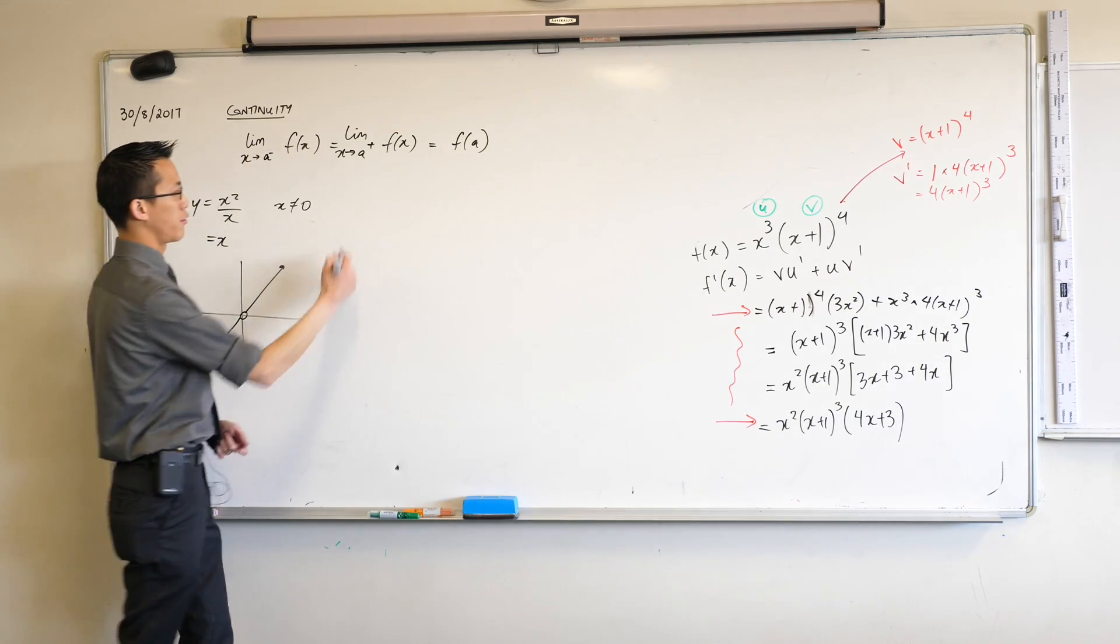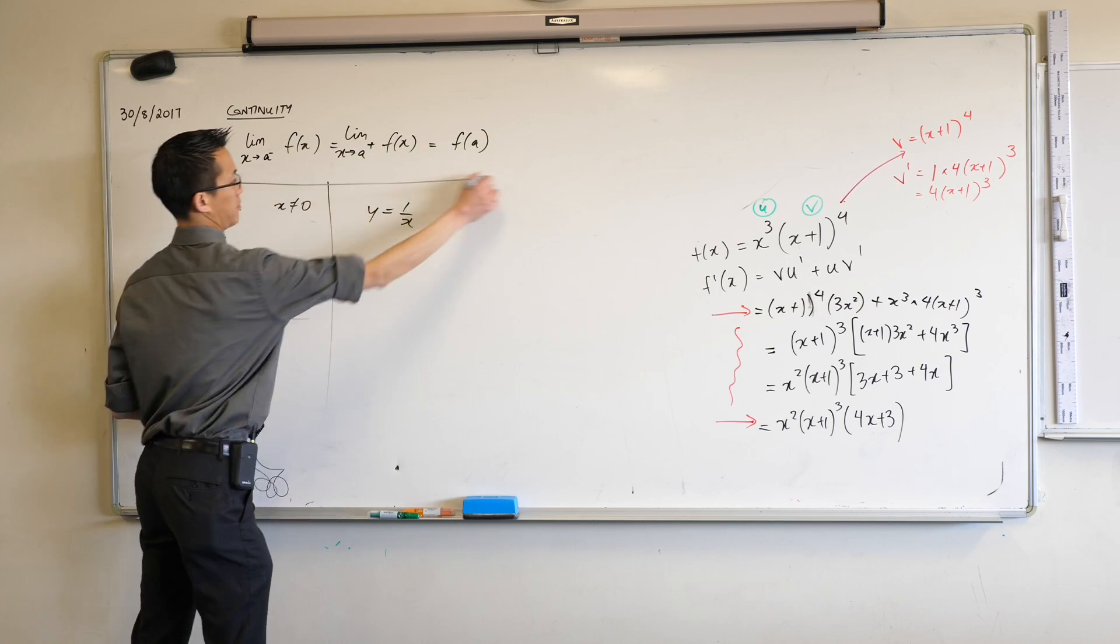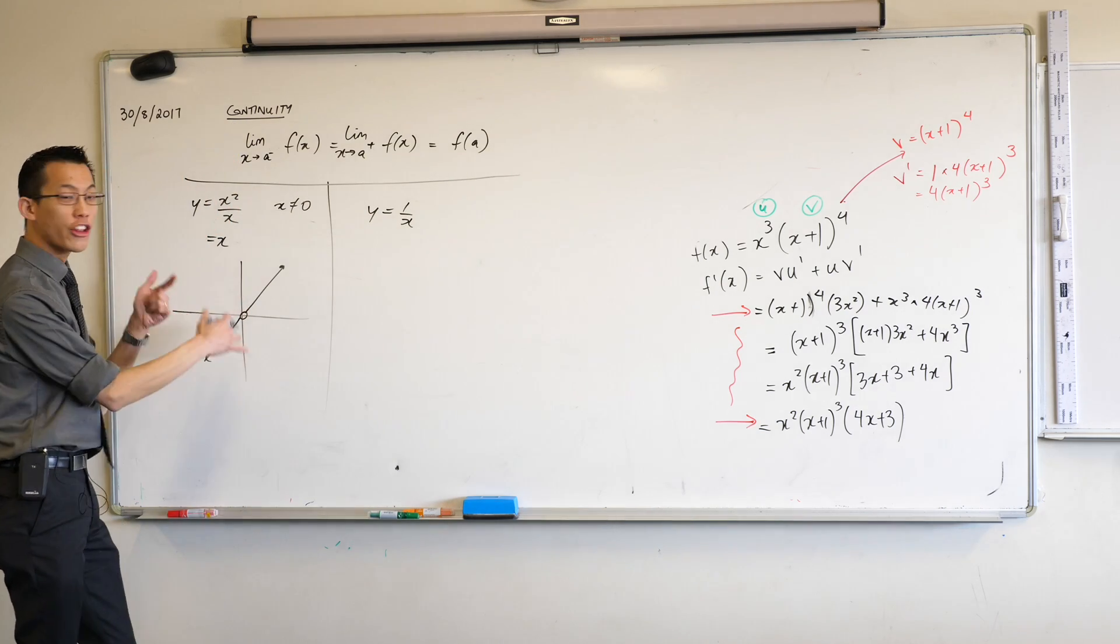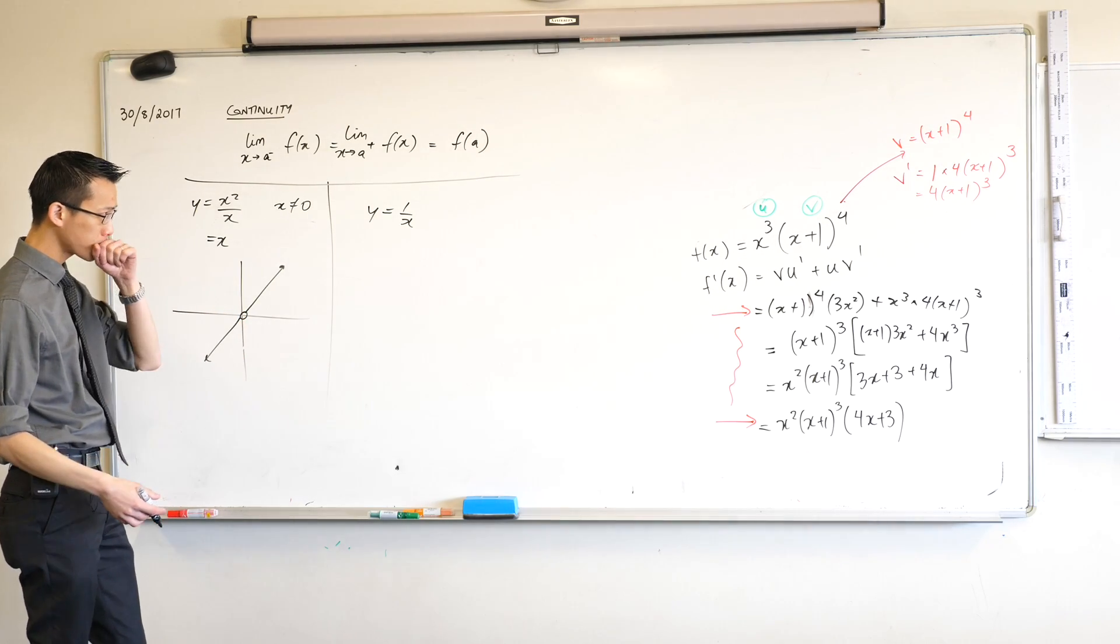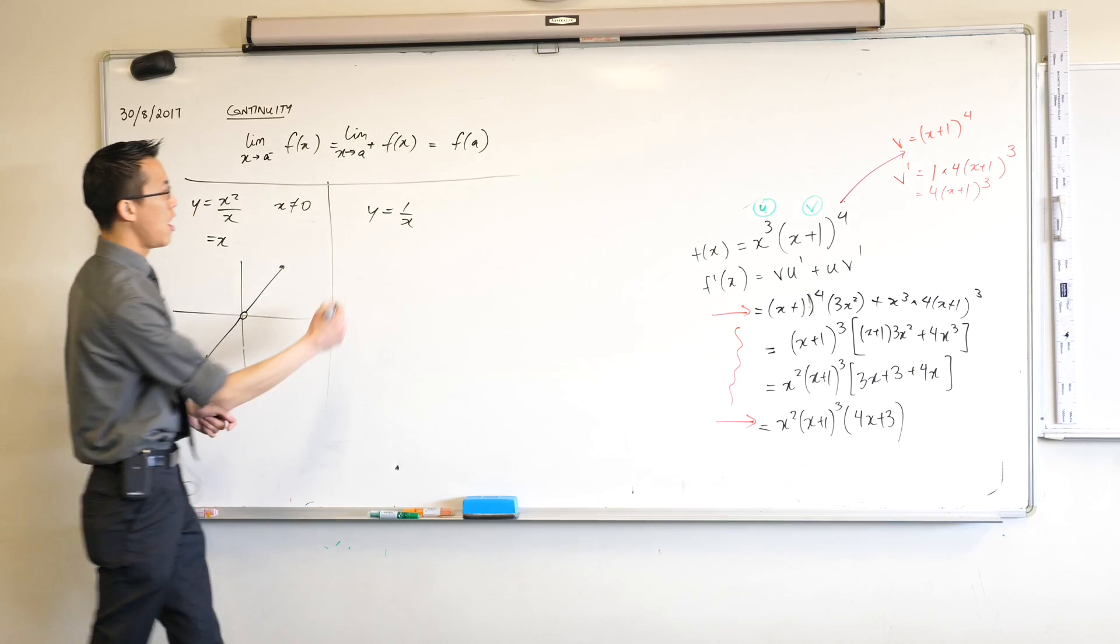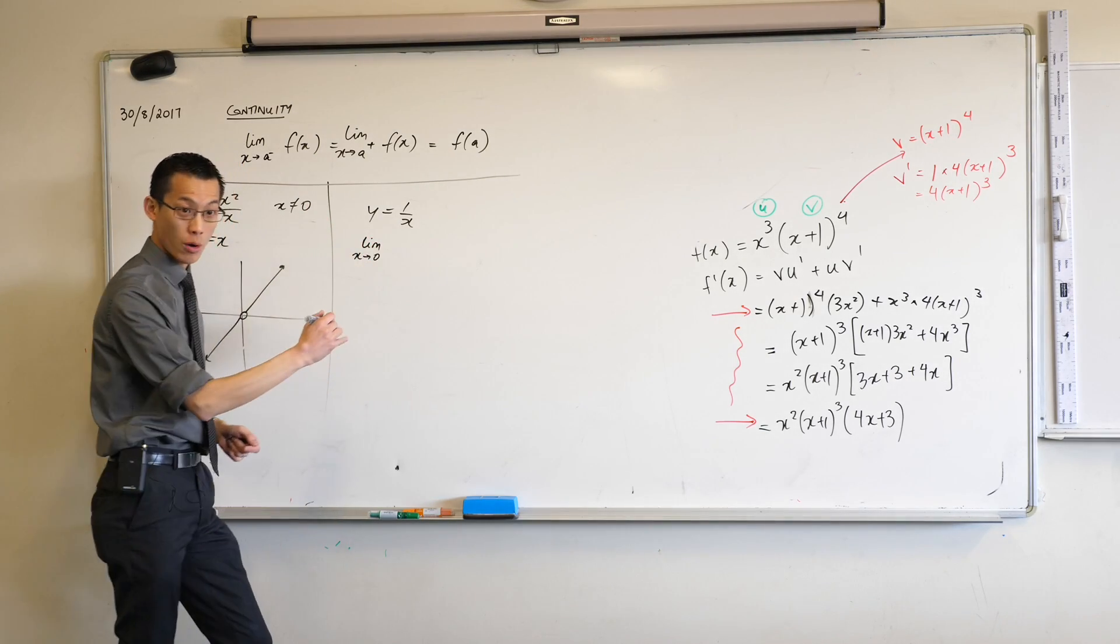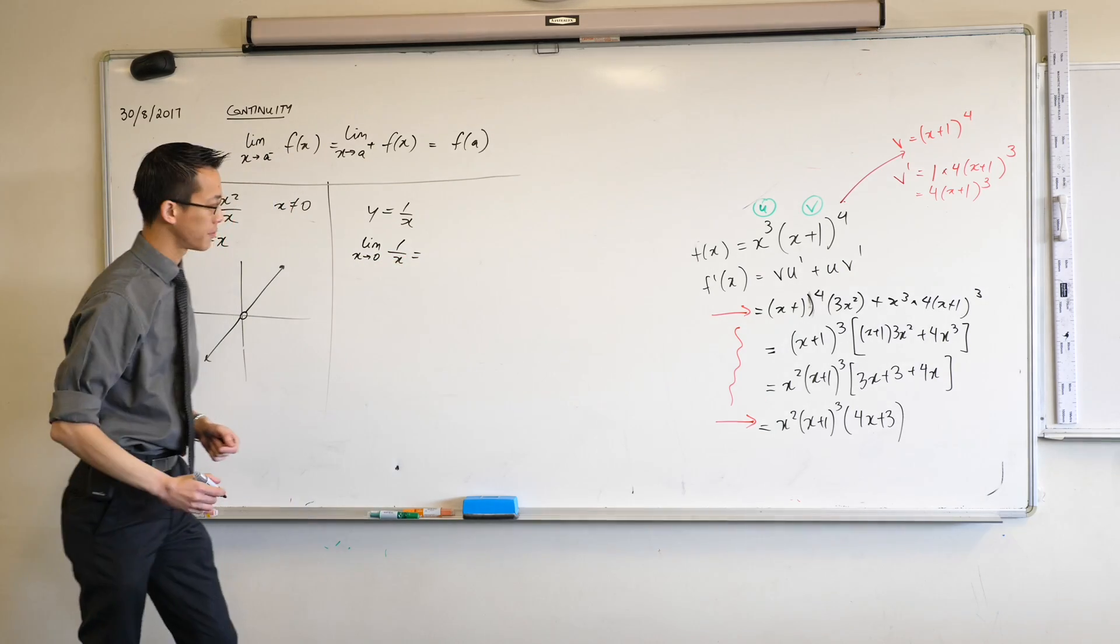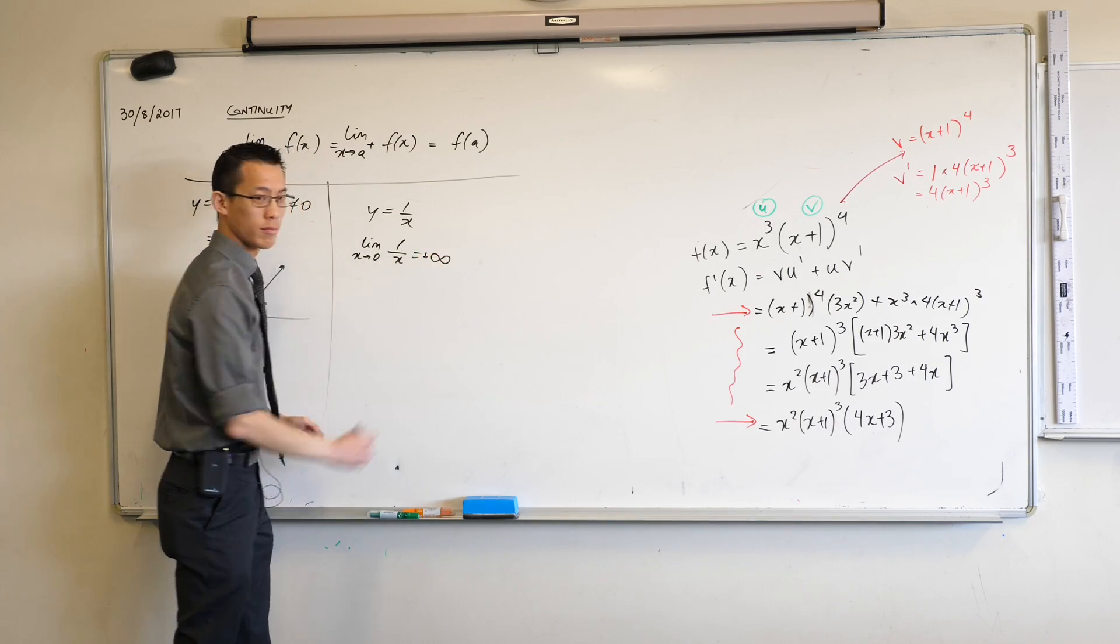You can also show for instance for a function like say y equals 1 on x, right? How can I prove that this is not continuous and not just look at a drawing and say because the drawing says so? I would say the limit as x approaches zero of 1 on x is going to be positive infinity, right?